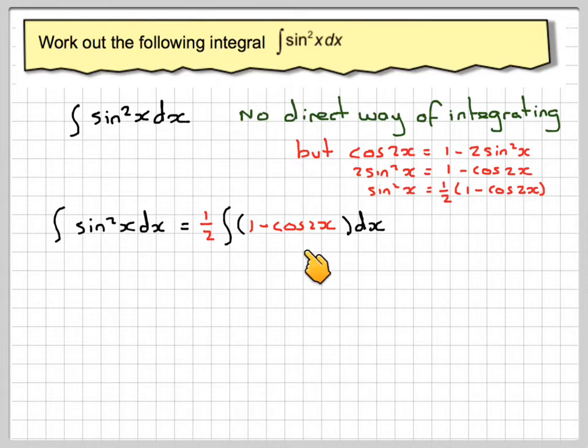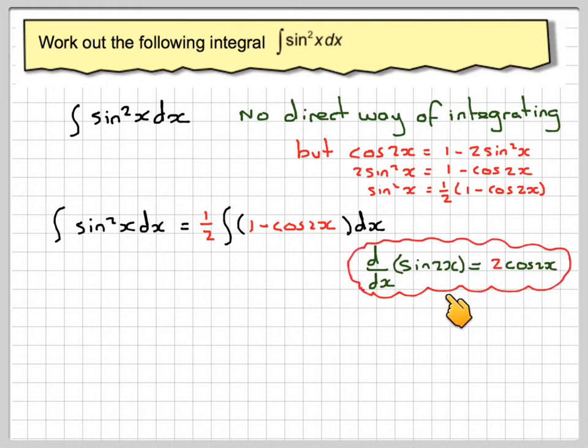Now, for the integral of this, if we think the answer comes from sine 2x and we differentiate that, we get 2 cos 2x. We've got 2 times too much, so we need to put a half in. The integral of 1 with respect to x is x itself. So we have one-half brackets x minus one-half sine 2x.